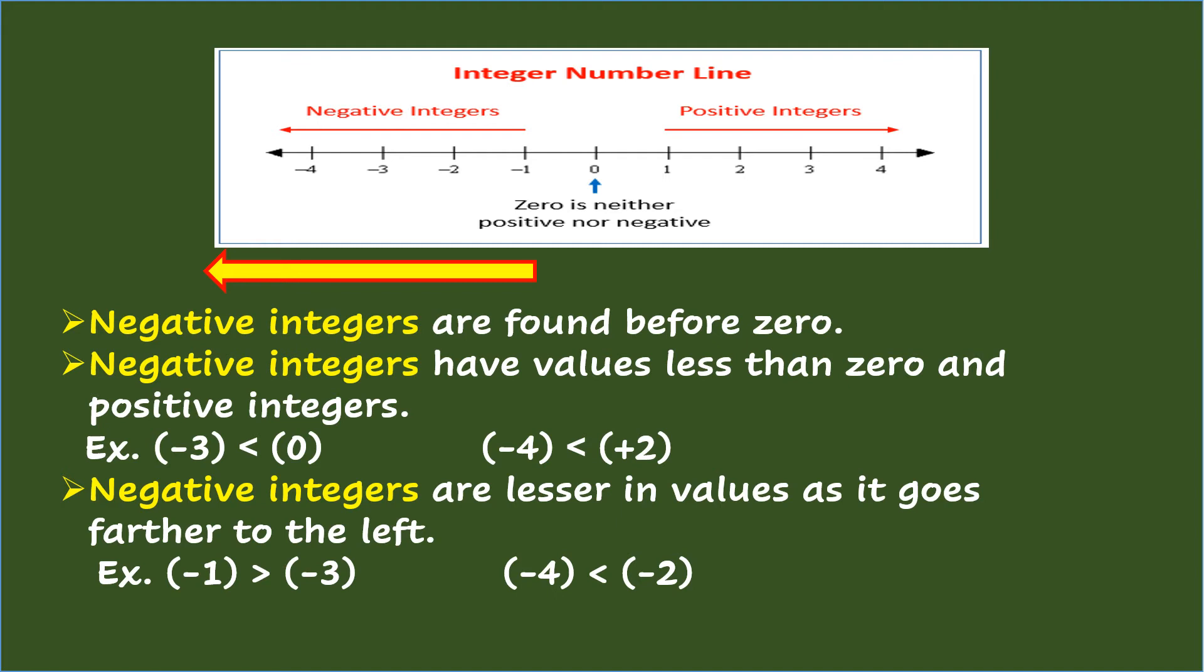Example: (-3) < (0). (-4) < (+2). Negative integers are lesser in values as it goes farther to the left. Example: (-1) > (-3). (-4) < (-2).